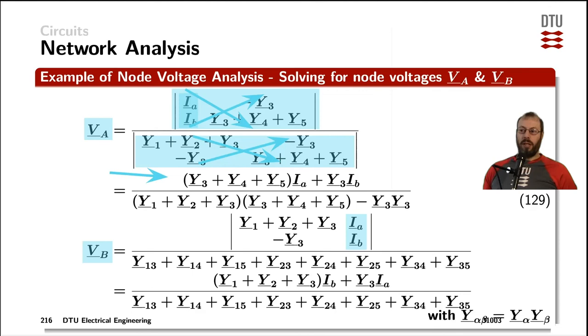For reducing the amount of writing I have to do with the indexes here, I'm redefining the admittance here with the alpha and beta, Y alpha beta, to be the multiplication of Y alpha times Y beta.